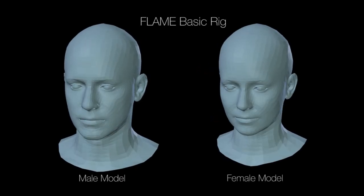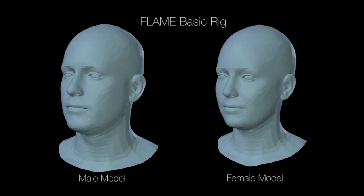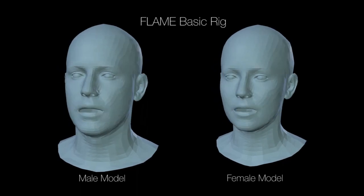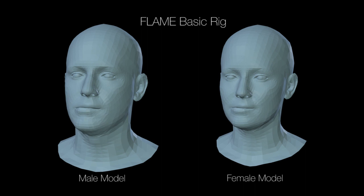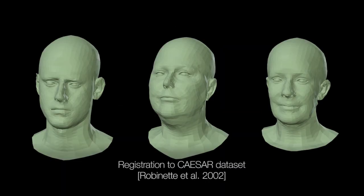We start with a manually created rig. Unlike some models, FLAME includes the neck and allows the head to rotate relative to it. It also includes an articulated jaw and eyeballs. The location of the neck, jaw, and eye joints is learned from training scans and automatically adapts to varying head shape.